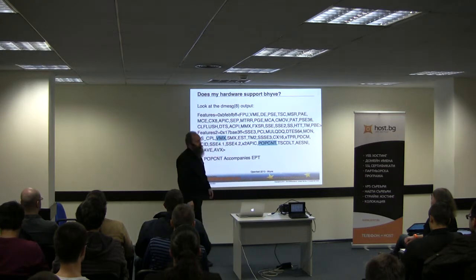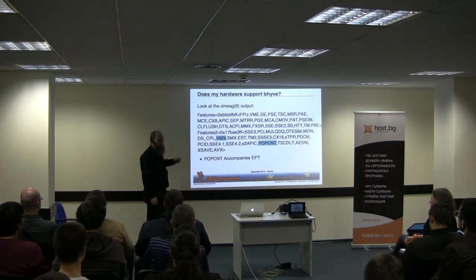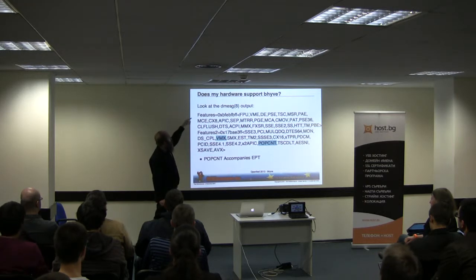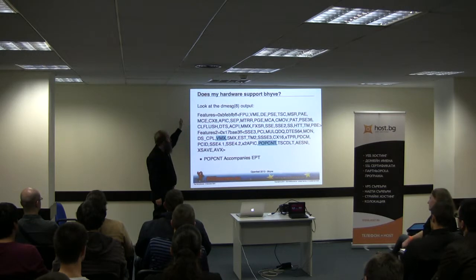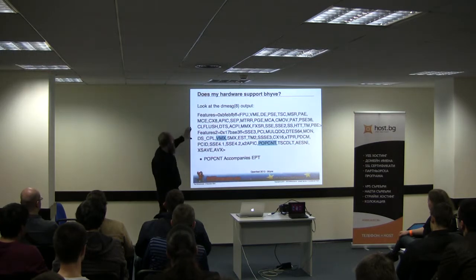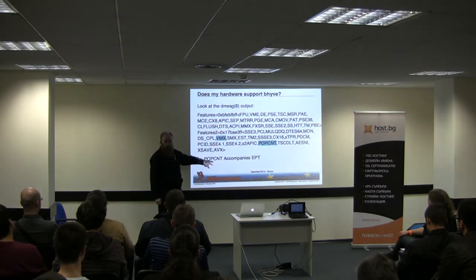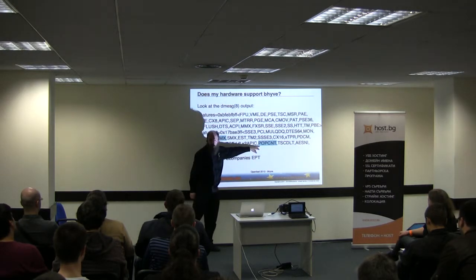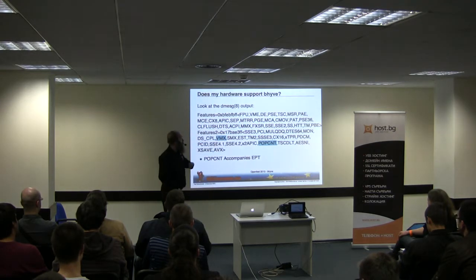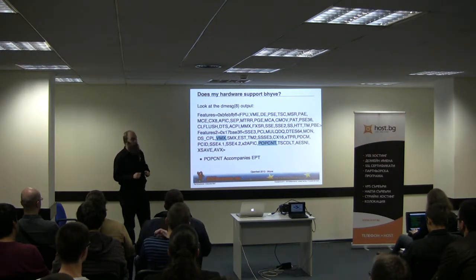To check if your computer supports the needed features, look at the processor feature list during FreeBSD kernel startup. You need to find 'vmx' — the Virtual Memory Extensions — and since EPT doesn't appear explicitly, look for 'POPCNT': on Intel CPUs, whenever you have EPT you also have POPCNT. If you have both vmx and POPCNT in your CPU, you can run bhyve. If not, you cannot run bhyve yet.